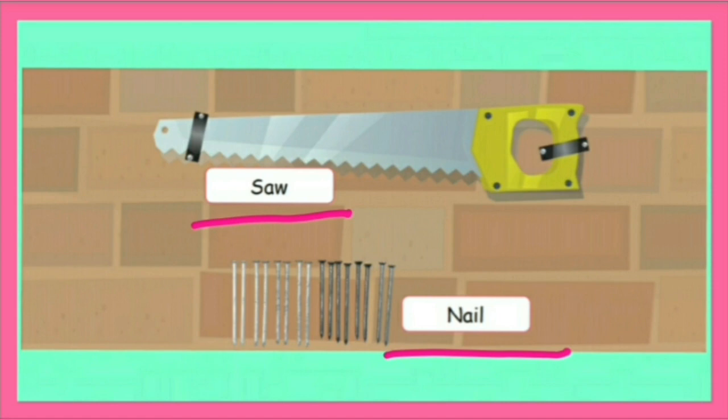Nail. N-A-I-L. Aani. A small thin piece of metal that is used for holding pieces of wood together or hanging pictures on it.